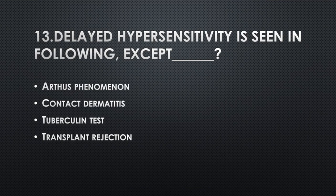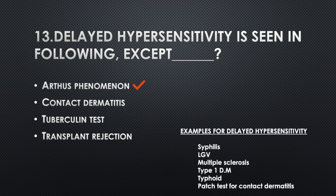Delayed hypersensitivity is seen in the following conditions except — Option A: Arthus phenomenon, Option B: Contact dermatitis, Option C: Tuberculin test, Option D: Transplant rejection. Answer: Option A, Arthus phenomenon. Examples of delayed hypersensitivity reaction: syphilis, LGV, multiple sclerosis, type 1 diabetes mellitus, typhoid. Patch test for contact dermatitis.